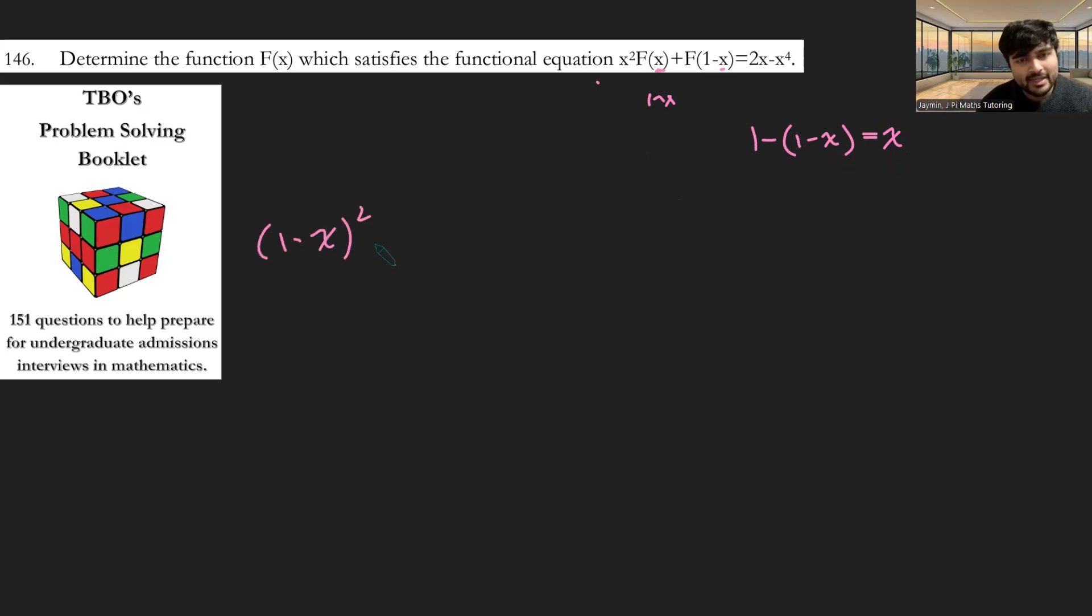So let's do that. We get (1-x)² times f(1-x) plus f(x) equals 2 lots of 1-x minus (1-x)⁴, like so. So this is pretty cool.